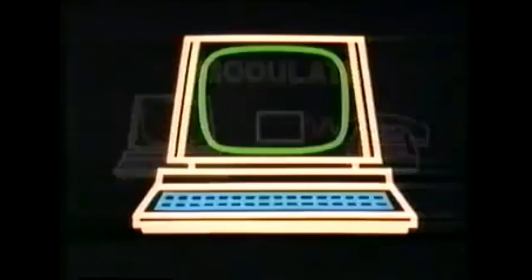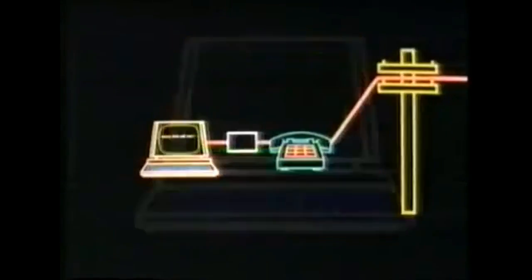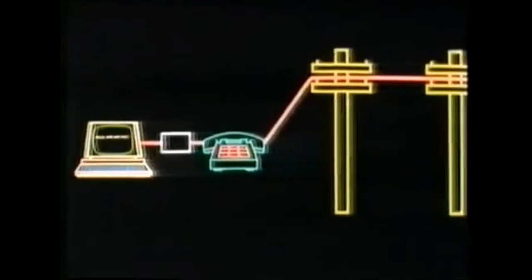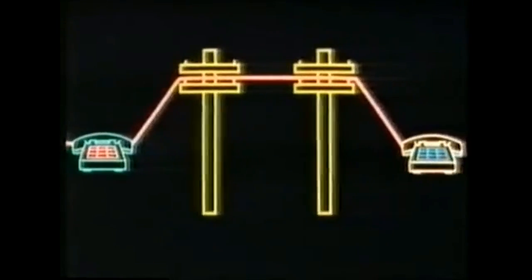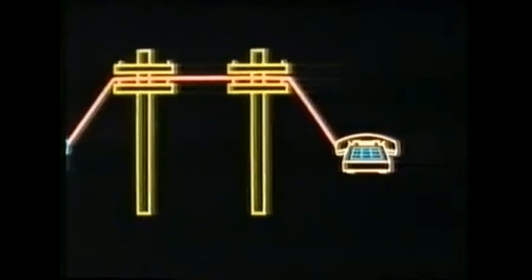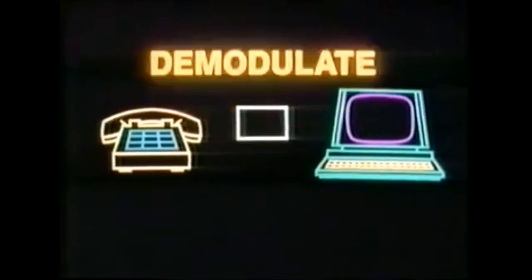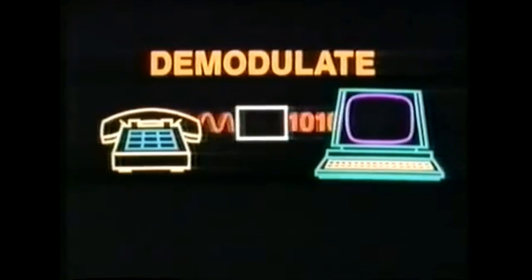Whatever you type in at your computer can go out over the phone lines and be understood by any other telephone. But before that telephone can send your message along to a second computer, another sort of black box is needed to transform, or demodulate, telephone talk back into computer talk.